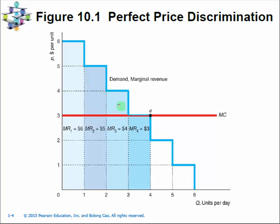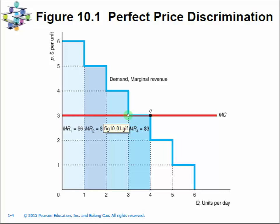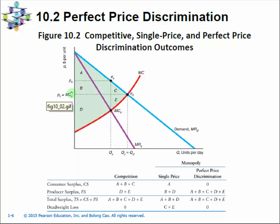A very interesting conclusion is that with perfect price discrimination, we actually achieve economic efficiency — total surplus is maximized because the last unit is sold at a price equal to marginal cost. Even though all consumer surplus is transferred to producers compared to a competitive market, it is not lost — there is no deadweight loss. The maximum possible total surplus is actually realized, making this an efficient outcome.